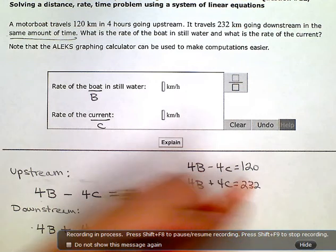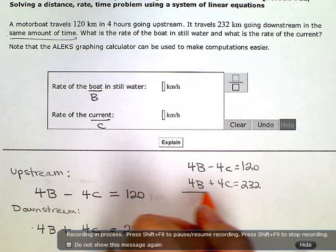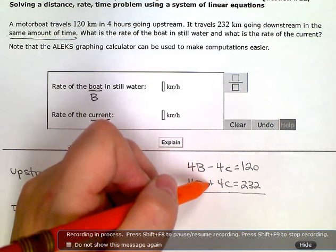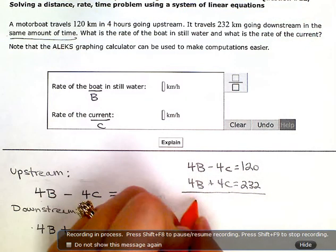So to do elimination, I need two equations in standard form, which I have, and I need one set of exact opposite terms, which I have. So I can go ahead and do my column addition now.